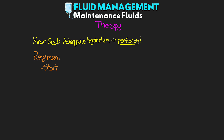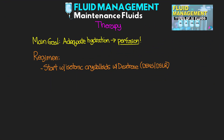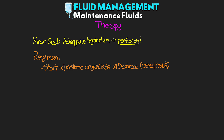When it comes to our IV fluid regimen, we typically want to start with isotonic crystalloids that contain dextrose — think D5NS or D5LR. Our goal with dextrose solutions is to prevent starvation ketosis. Once we have nutritional support on board, we want to switch to regular fluids without dextrose, such as normal saline or lactated Ringer's.